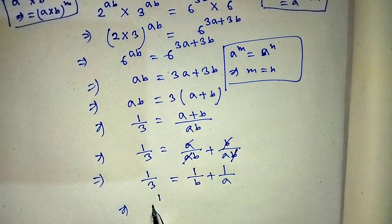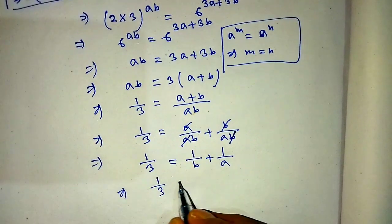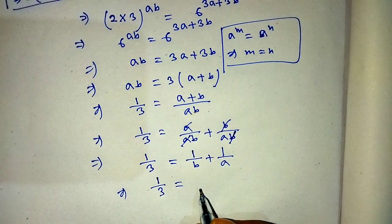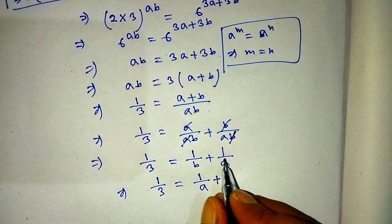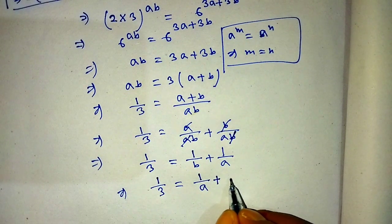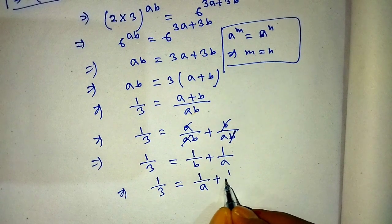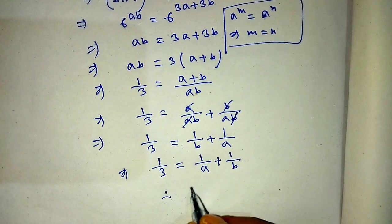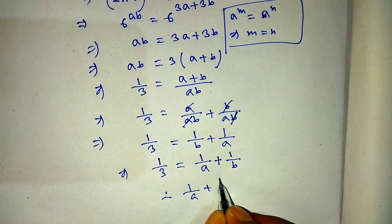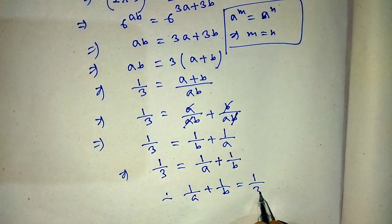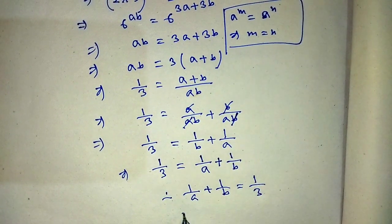So we have 1 over 3 is equal to 1 over A plus 1 over B. Therefore, the value of 1 over A plus 1 over B is equal to 1 by 3. This is our final answer.